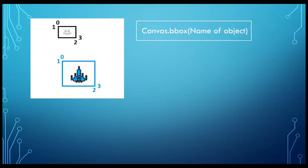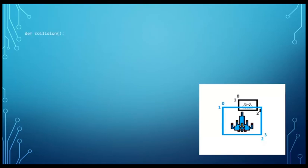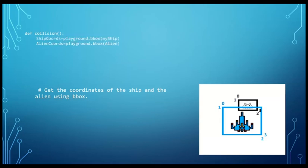For example, the variable 'ship_coordinates' equals playground — our canvas is called playground — dot B-Box, open brackets, then the object name, which is my_ship. Likewise, alien_coordinates equals playground dot B-Box, open brackets, alien. Within the program we need to create a function called collision: define collision, open brackets, close brackets, colon. We then get the coordinates of the ship and alien B-Box — ship_coordinates equals playground dot B-Box, my_ship, and alien_coordinates equals playground dot B-Box, alien.